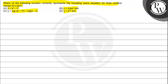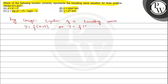Option D: y is equal to e raised to the power x sine. The concept we will use here is the equation of a traveling wave, which is given by y equals f(x plus t) or y equals f(x minus t). Here, y equals f(x plus t) denotes that the traveling wave is traveling in the negative direction, and y equals f(x minus t) also denotes the direction of the traveling wave.